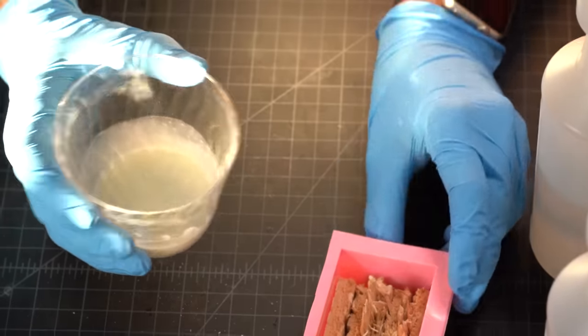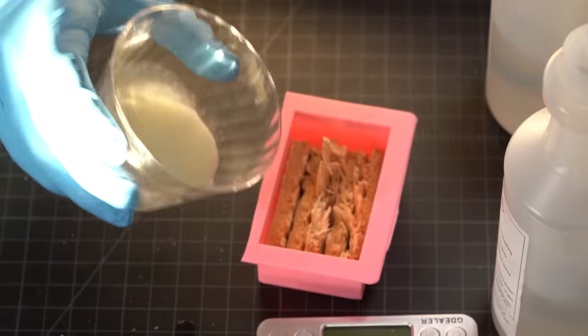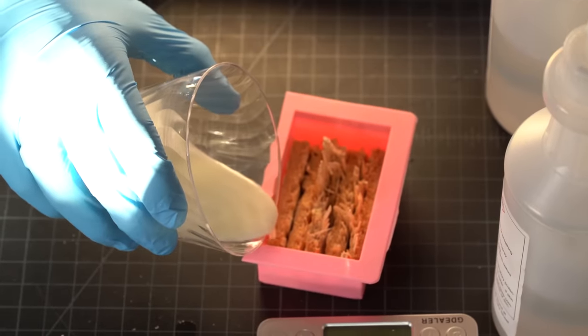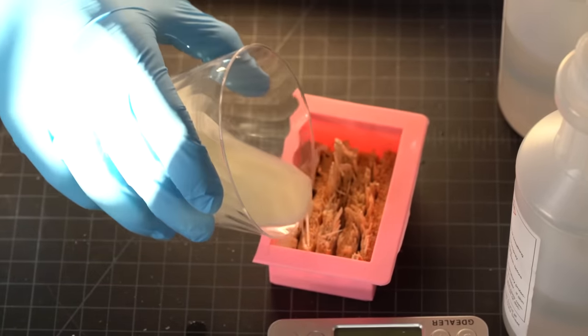Now just mix in a bunch of glow powder. This will glow white. Alright, I've got that all mixed up. I've got a ton of glow powder in there. Now I'll just slowly drizzle it over all of this.